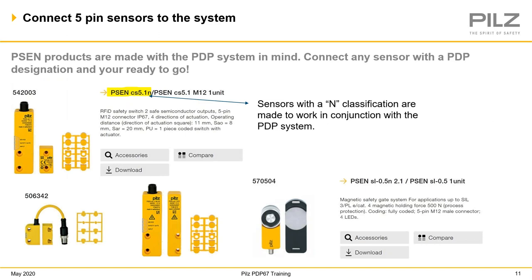As far as sensors, we have some designed to work for the system. You see here our codes as well as our SLOC. We actually have sensors specifically designed to work with the PDP system — made with PDP in mind. Any sensor that has an N classification, as you can see in the highlighted section on our website, is made to work in conjunction with the PDP system. But it's not just these sensors — it wouldn't be the best system if all we could put on were a few RFID codes and the SLOC.